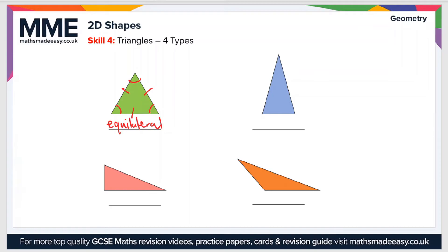Moving on, we have an isosceles triangle, which has two equal sides and the base angles are the same. The third type is a right-angle triangle, which does what it says on the tin — it has a right angle.